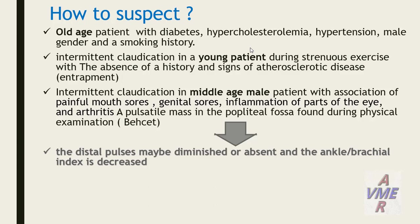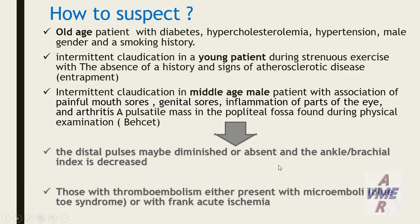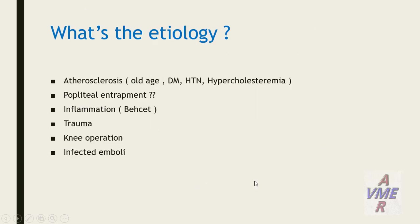What are the signs? The distal pulse may be diminished or absent, and the ankle-brachial index is decreased. Those with thromboembolism either present with micro-emboli blue-toe syndrome or with frank acute ischemia.